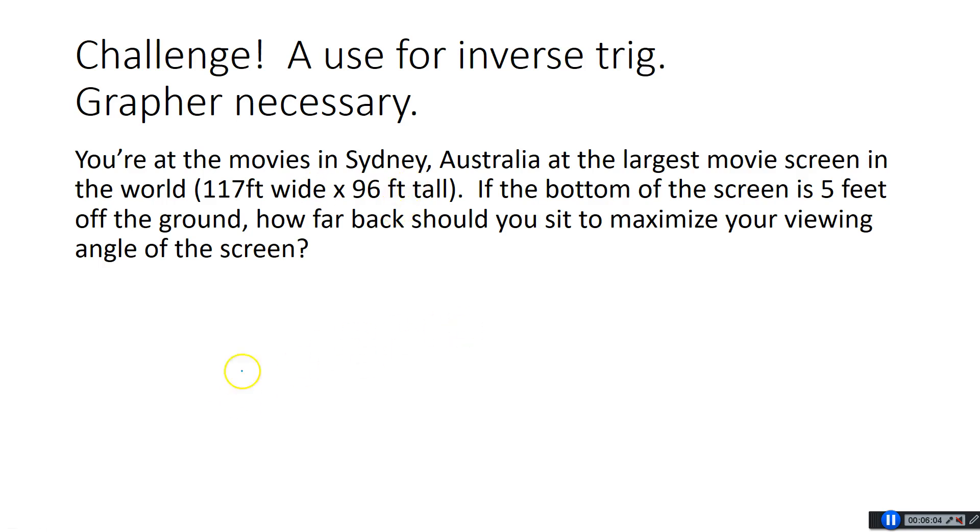If the bottom of the screen is 5 feet off the ground, how far back should you sit to maximize your viewing angle of the screen? Let me draw a picture of this. So we have a 96 foot tall movie screen, and it's 5 feet off the ground. Clearly not to scale. So the question is, if you're sitting like right here, if you're sitting in your chair right here, the viewing angle is going to be terrible. It's going to be way small. If you're sitting too far back though, you're not going to be able to see anything, because the viewing angle, once again, is going to be pretty small.